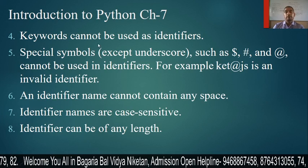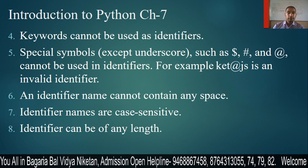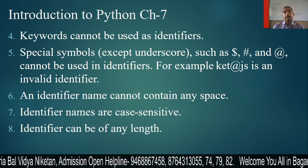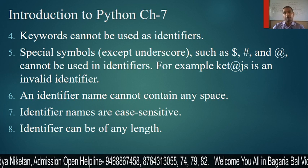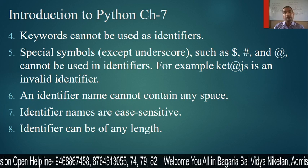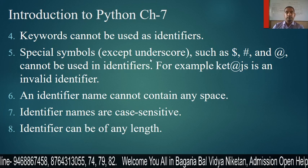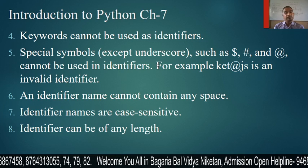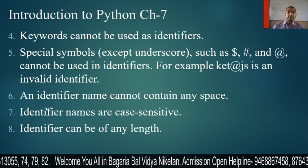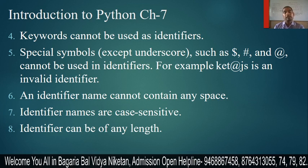A keyword cannot be used as an identifier — this means any keyword cannot be used as a variable name. Also, a special symbol except underscore cannot be used in an identifier. We do not use any special symbol other than underscore. Additionally, an identifier name cannot contain any space, so there is no space in your variable name.